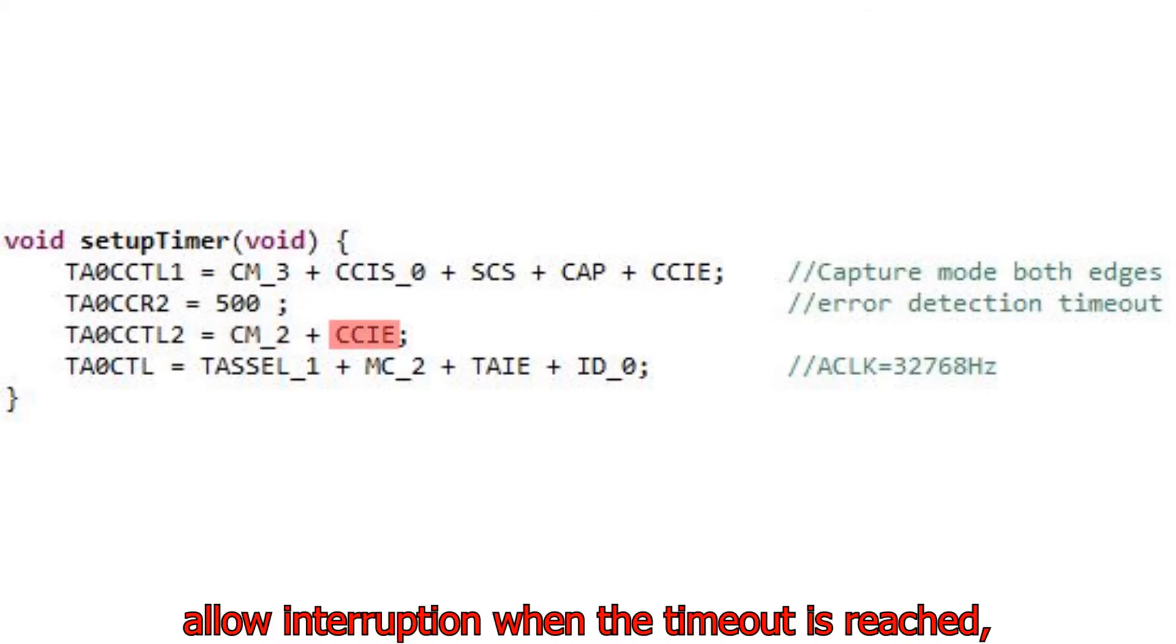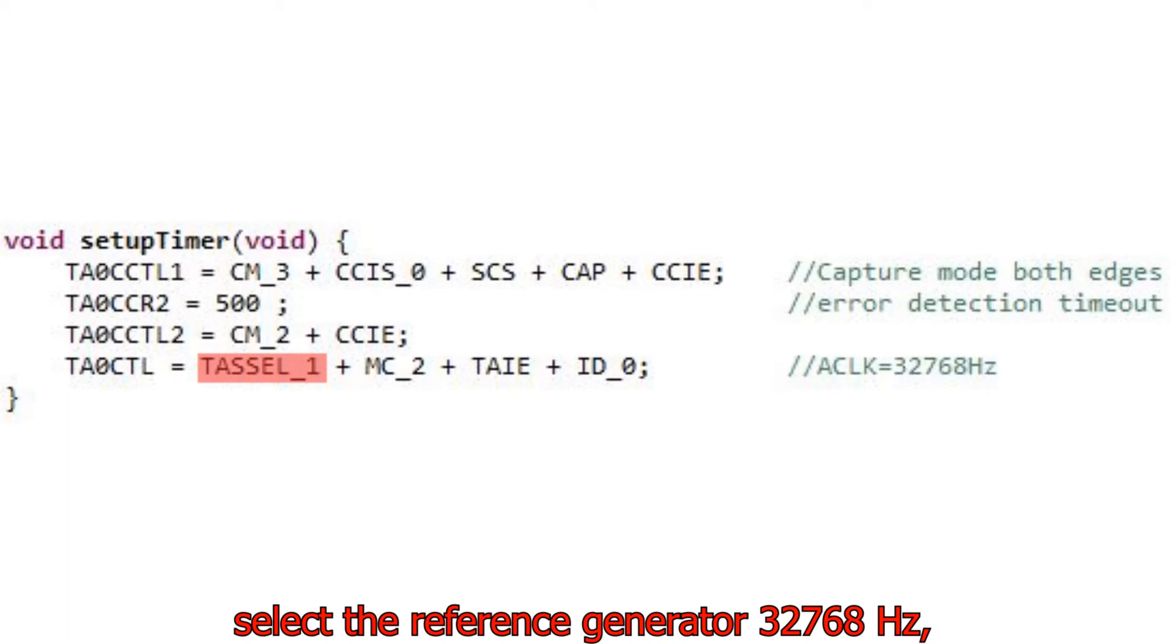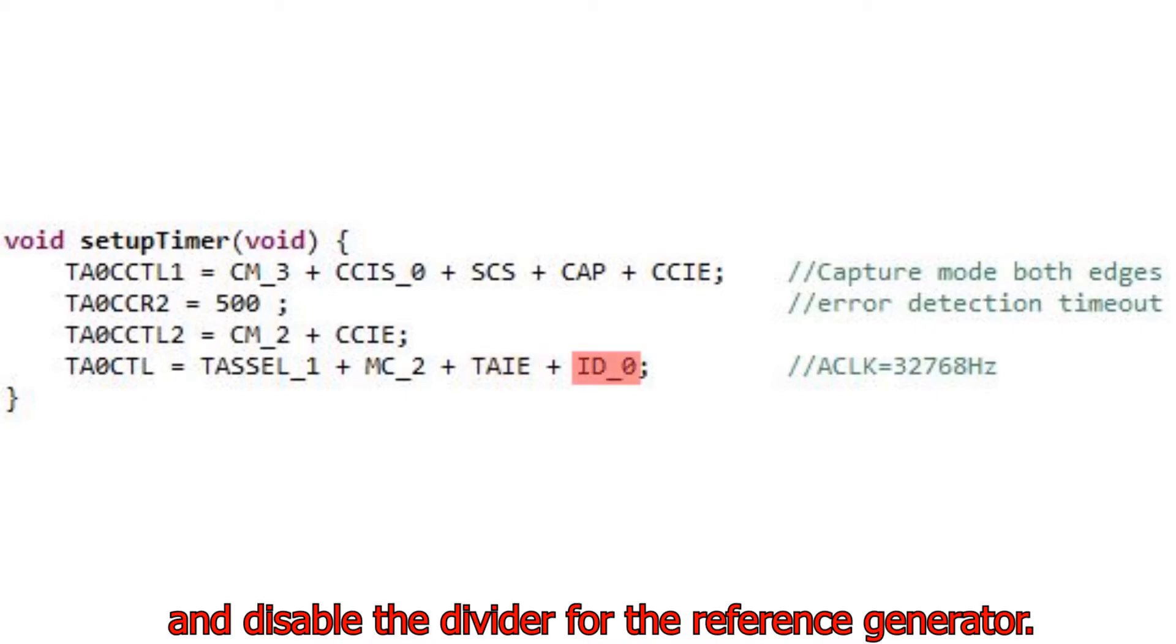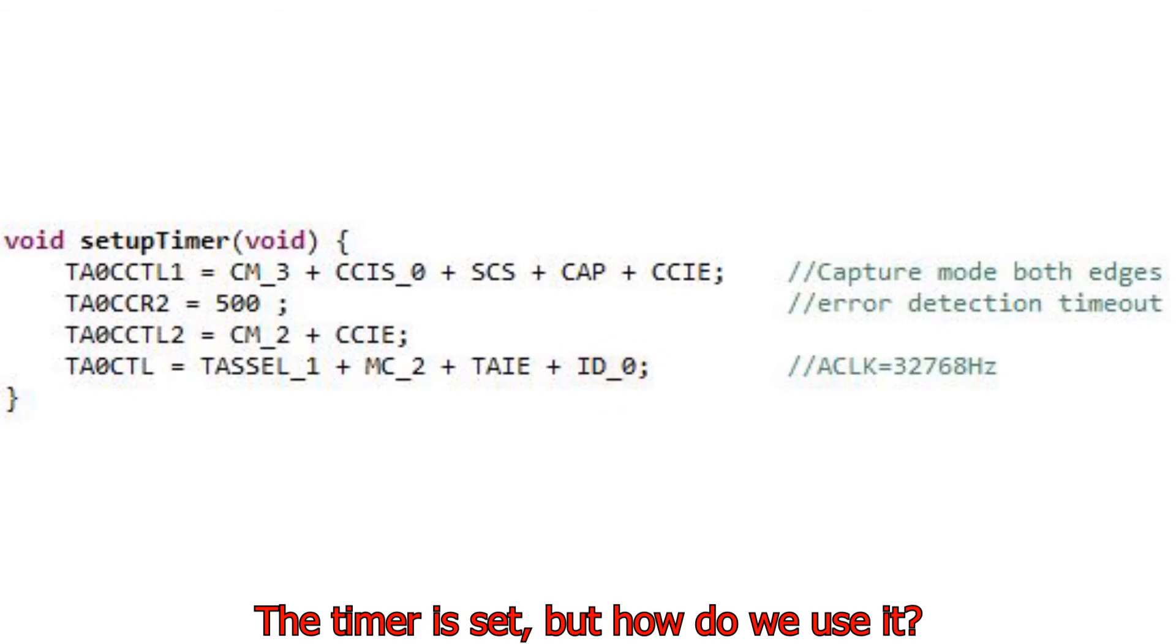Allow interruption when the timeout is reached. Select the reference generator 32768 Hz. Continuous timer count. Allow interrupts from the timer. And disable the divider for the reference generator. The timer is set, but how do we use it?